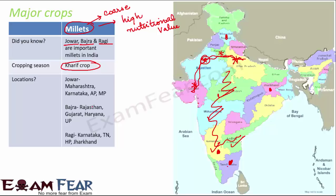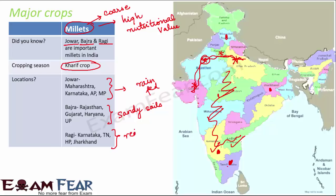These millets grow in different regions because of specific needs. Jawar is a rain-fed crop needing more rainfall, so it grows where sufficient rainfall is received. Bajra grows on sandy soils found in Rajasthan and Gujarat due to desert areas. Ragi grows in red soils, black soils, and even sandy loamy soils, hence found in different regions.